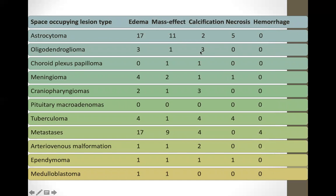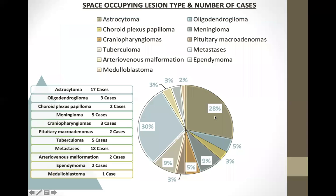Calcification was predominantly seen with oligodendrogliomas, craniopharyngiomas, metastasis, and tuberculomas. The ratio of all tumors found in my study showed astrocytoma involved in 28%, followed by metastasis in 30% of patients.